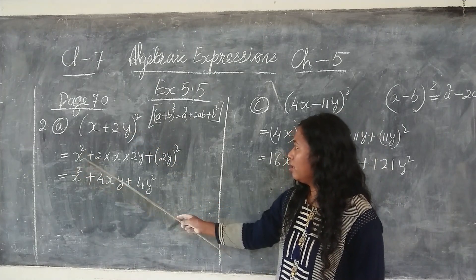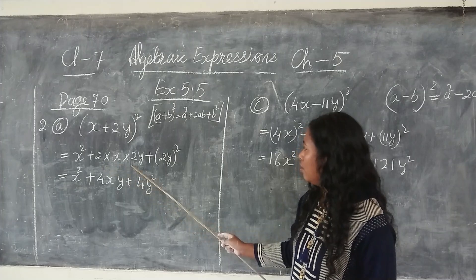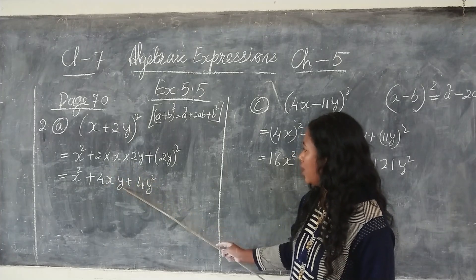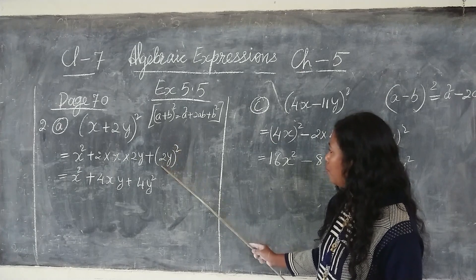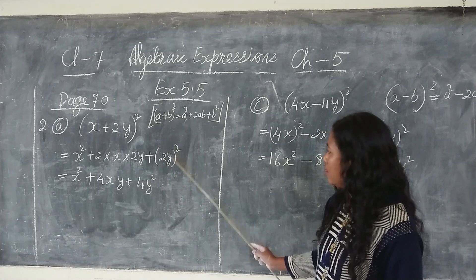Now x square plus here 2 to the 4, so 4 is coming here, then x, y, plus 2 to the 4, then y square.